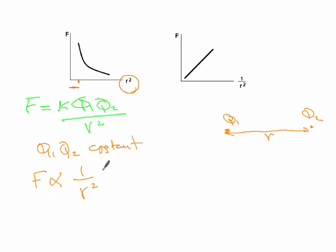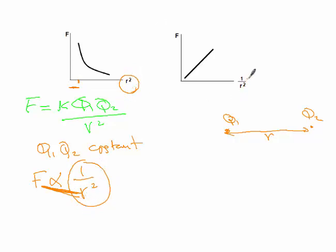What about the relationship between F and 1 over R squared? Since F and R squared are inversely proportional, F is directly proportional to 1 over R squared. Just like Y is directly proportional to X, where X here is 1 over R squared instead of R squared — so we get a straight line graph.